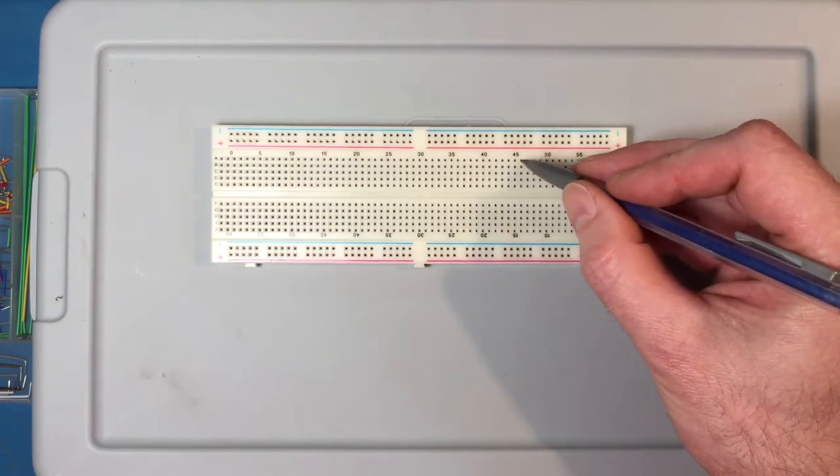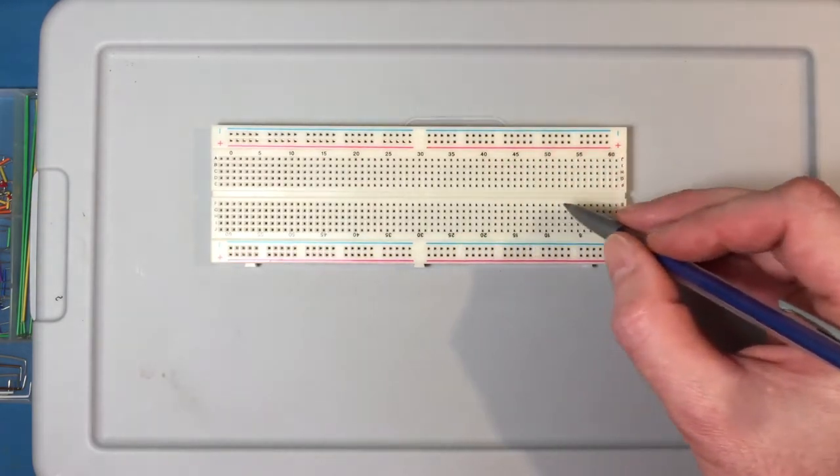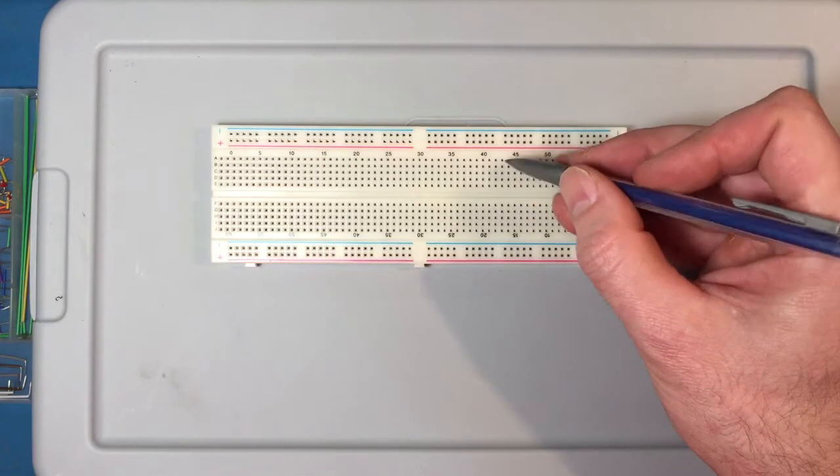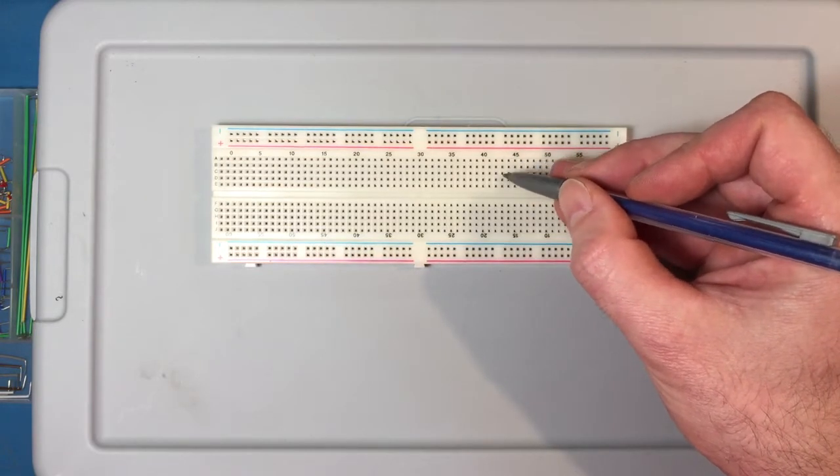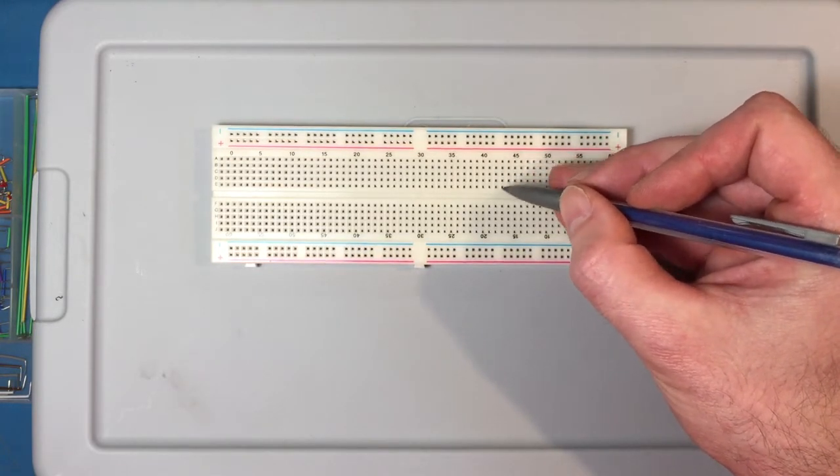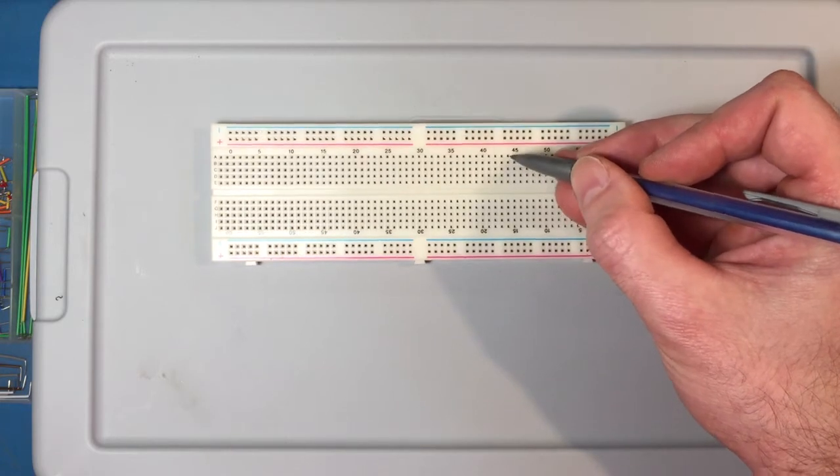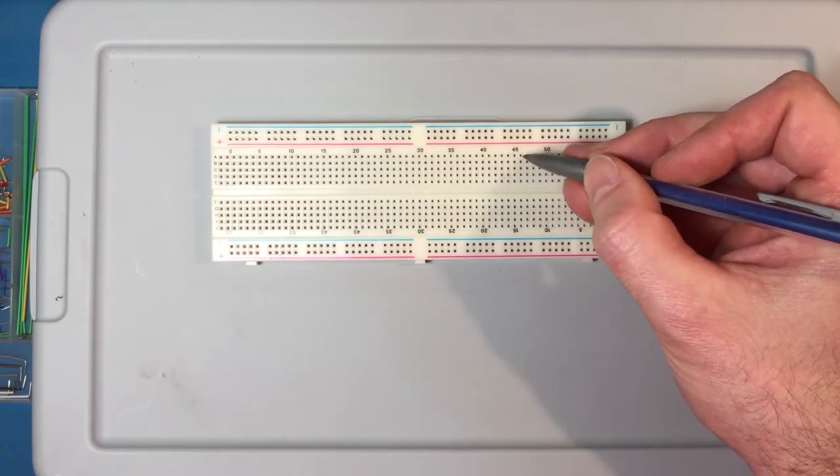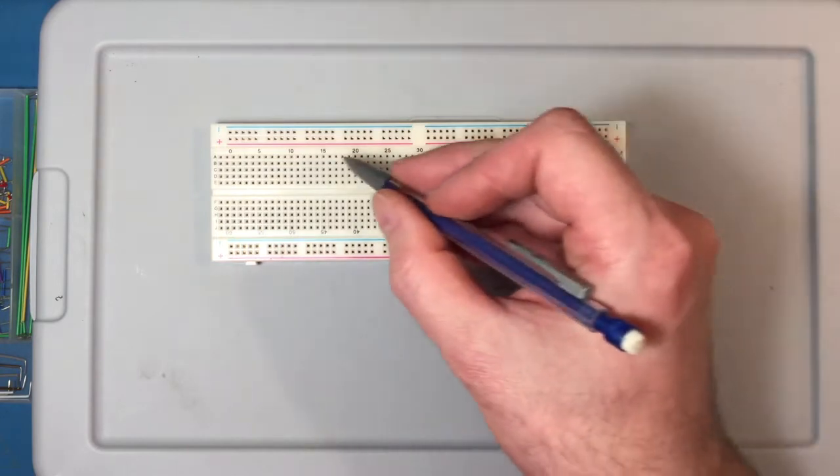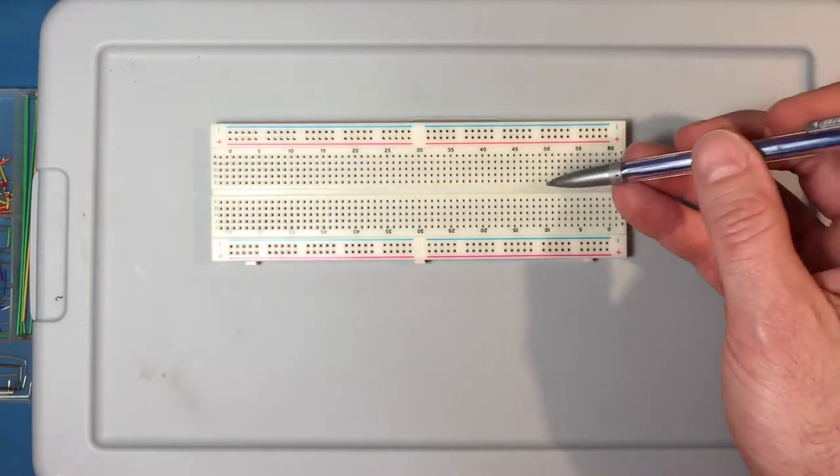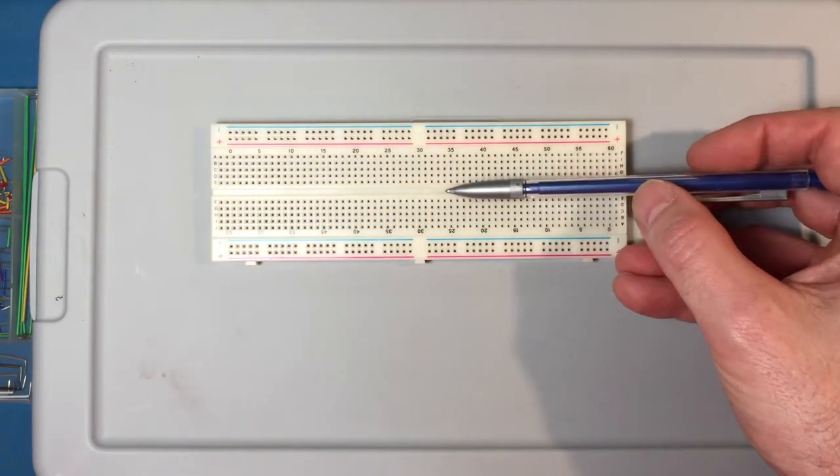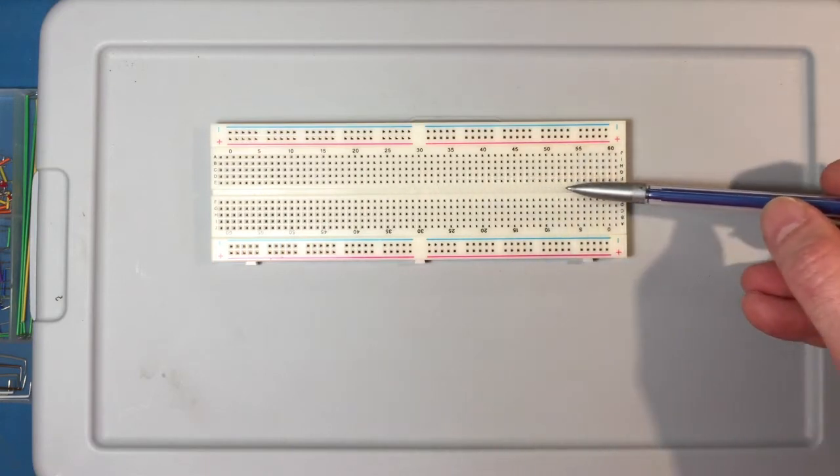And how it works is we call these here the rows. So all these five holes right here in this row are connected together. Same with all these five, and all these five, and all these five, and so on up and down the board. Now there's no connection across this part right here down the middle.